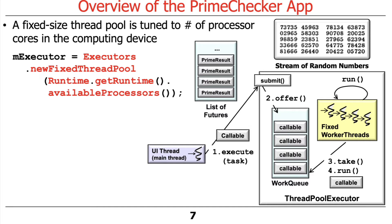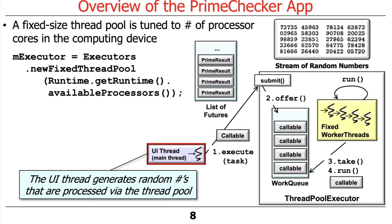A fixed-sized thread pool is tuned to the number of processor cores in the computing device. Here's the call to Executors.newFixedThreadPool with Runtime.getRuntime().availableProcessors() — so if there are four cores, you get four threads. As with the other example app, we have a user interface thread that's separate from the pool of threads doing the computations, and it generates random numbers that are then processed by the thread pool.